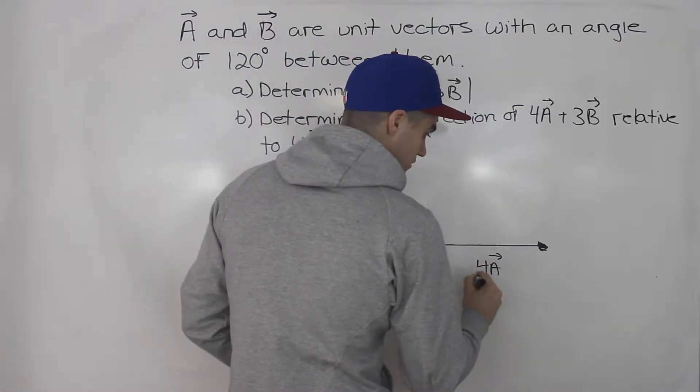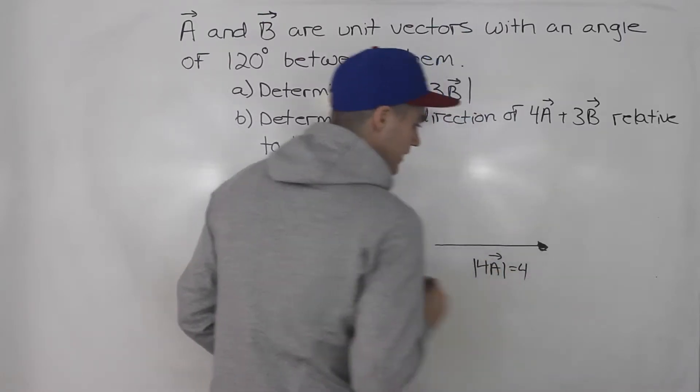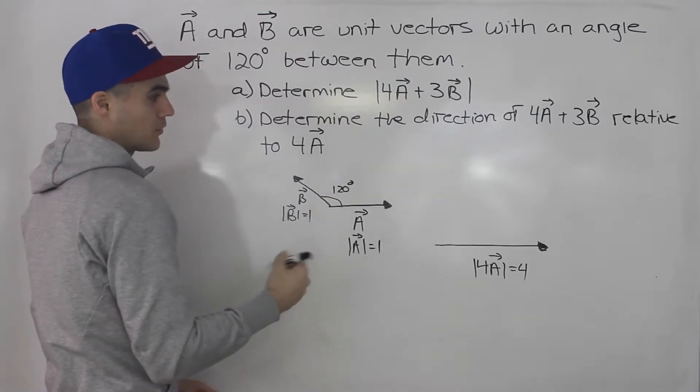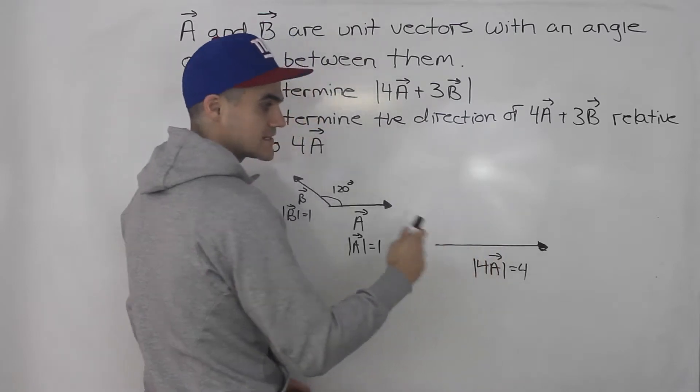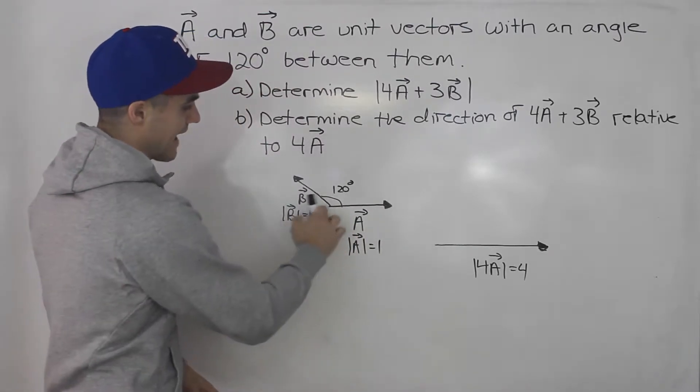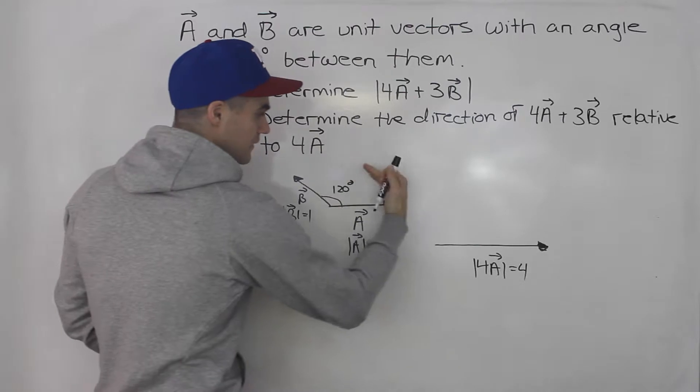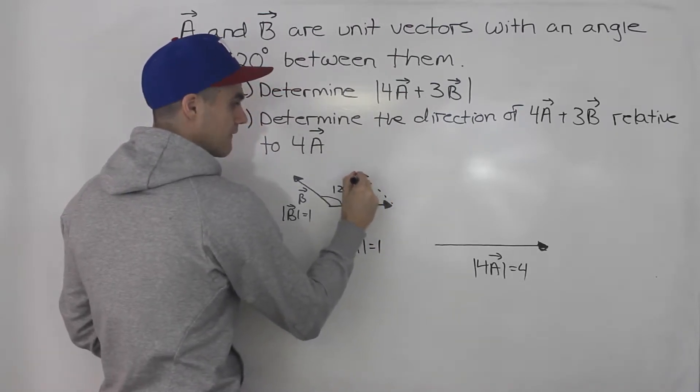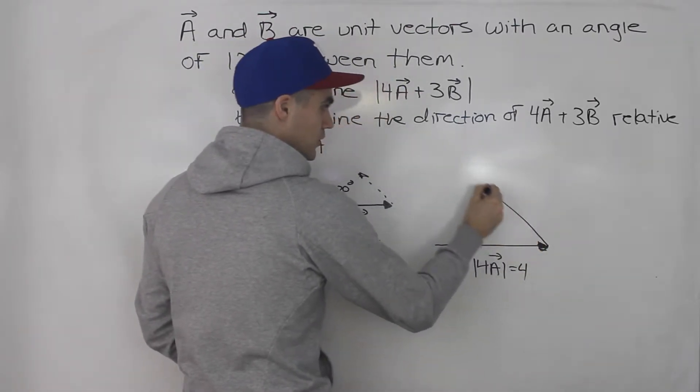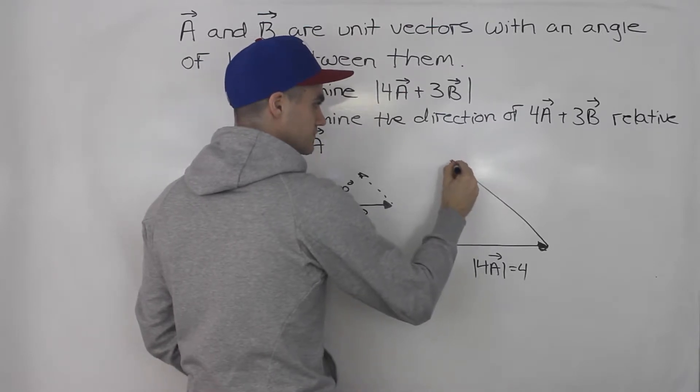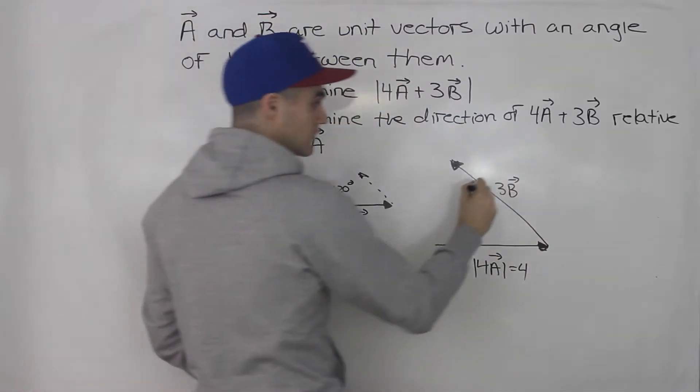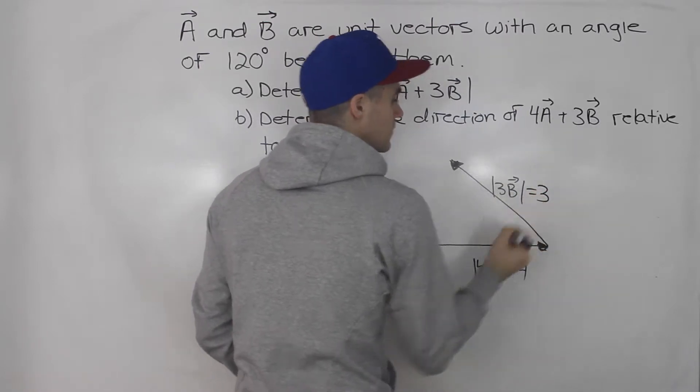Four times the magnitude means the magnitude of this is going to be 4. And then we have to add 3b to it. Now when we're adding vectors, we have to add the tail of the next vector to the head of the previous vector. So notice this is tail to tail. So if we were adding these two, like a plus b, we would have to take this vector and shift it like that. So when we're adding 3b, instead of it being tail to tail, we would shift it and it would go this way, like this. So this would represent 3b over here.